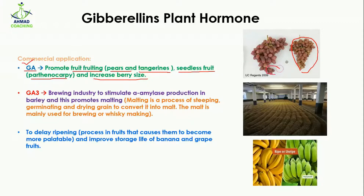When GA3 is used, it helps in the brewing industry to stimulate alpha-amylase production in barley, and this promotes malting. Malting is a process of steeping, germinating, and drying grains to convert them into malt. The barley is dried and germinated so it is converted into malt, which is used for brewing or whiskey making.